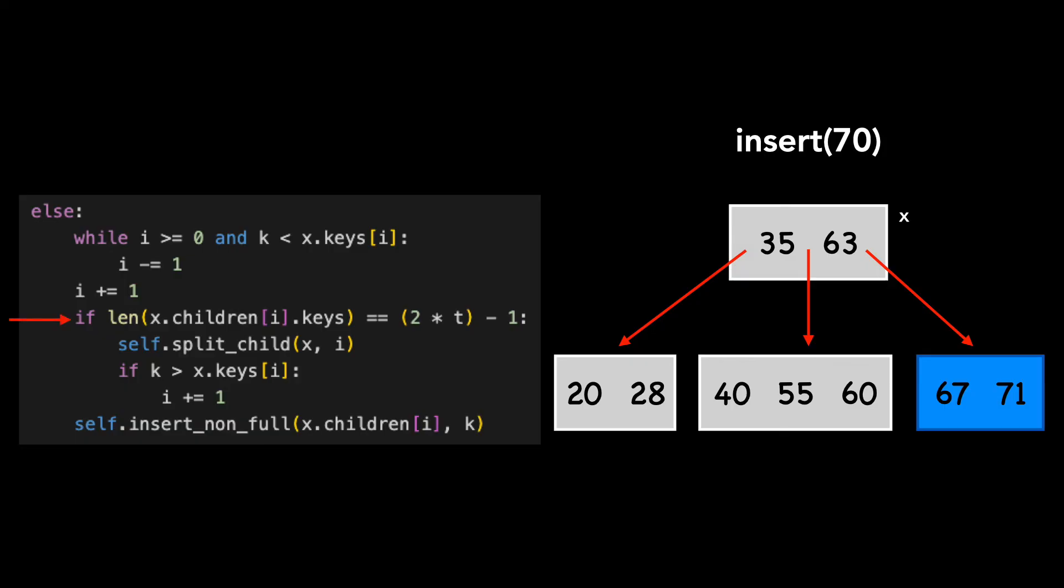I won't show it, but if the child is full, we first split it. We then call insert non-full again, and do this recursively until we reach a leaf.